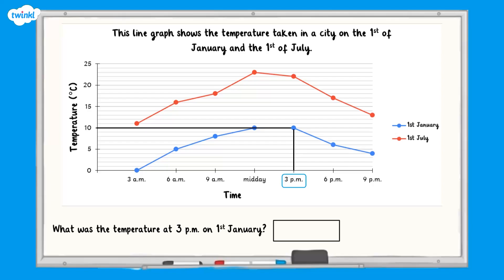We can use the grid lines on the graph to help us. The point where we meet the y-axis will give us the answer. We can see it was 10 degrees at 3pm on the 1st of January.